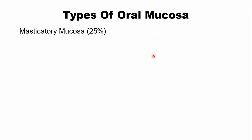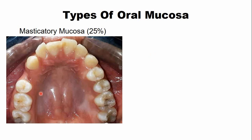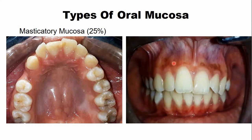The second type is masticatory mucosa. It is present on the hard palate, where the entire area is covered by masticatory mucosa. In addition, the gingiva is also formed by masticatory mucosa. Above the gingiva you can see a color change — that area is the alveolar mucosa, which is lining mucosa, distinct from the masticatory gingiva.